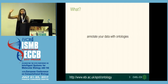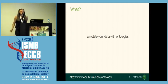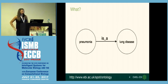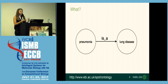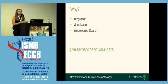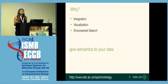So who here knows what an ontology actually is? And who actually uses ontologies? Quite a lot. So for those of you who don't know, ontologies is a structured way to represent knowledge about a domain. It's a way to represent entities in the domain and relationships between them. So let's say if we're in the disease domain, we have our two entities, and we know that pneumonia is a lung disease. Now, why would we want to annotate our data with these entities, with these ontology terms? Well, it helps us integrate our data, visualize our data, and it empowers our searches.